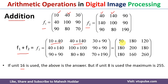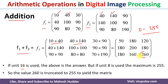One thing to remember: if the image is 16-bit, we get 2 raised to 16 possibilities and all values are valid. But for 8-bit images, 2 raised to 8 equals 256, meaning values must be in the range 0 to 255. So any value exceeding 255 — for example, 260 — must be truncated to 255.